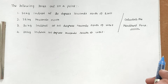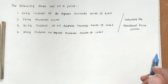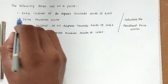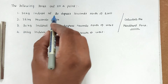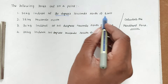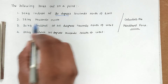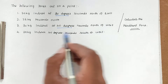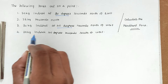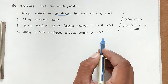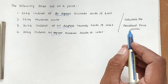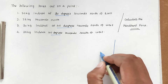Hello friends, welcome to Civil Engineering Exam. Today we are going to see a problem related to engineering mechanics, specifically the topic of resultant force. The problem involves the following forces acting on a point: 20 kg inclined at 20 degrees towards the north of east, 25 kg towards the north, 30 kg inclined 40 degrees towards the north of west, and 35 kg inclined 40 degrees towards the south of west. First, we have to draw the force diagram.